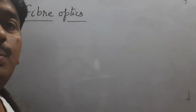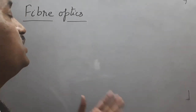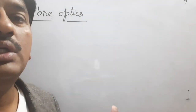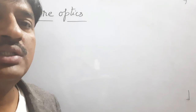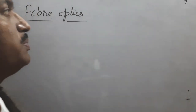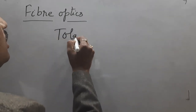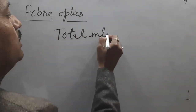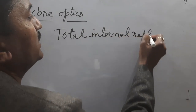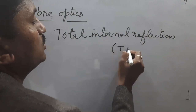Dear students, the topic of today's video is fiber optics. Fiber optics means transmission of light through the fiber of plastic, glass and other transparent material, and it works on the principle of total internal reflection, also known as TIR.